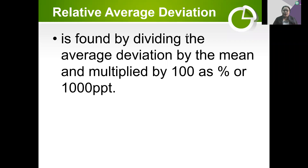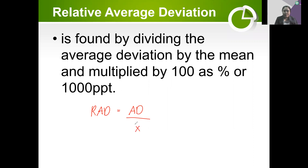After the average deviation, we have the relative average deviation, or RAD. The RAD is computed as the average deviation divided by the mean of the given set of data, times 100. So after the mean, we compute for the deviations to measure the variation in our data.